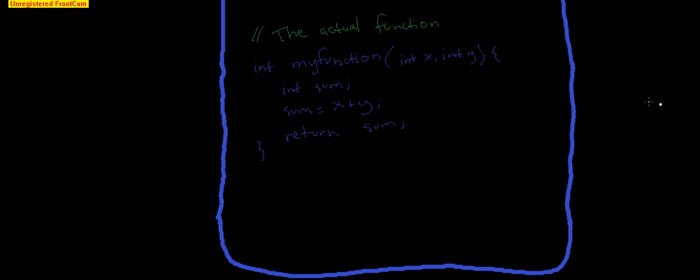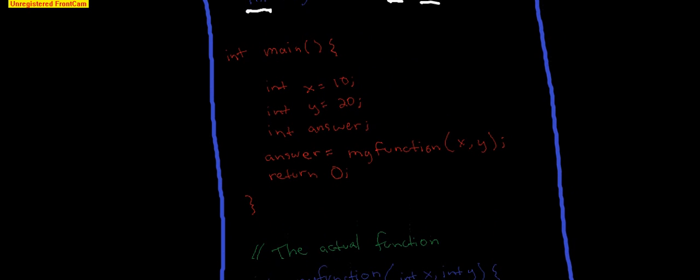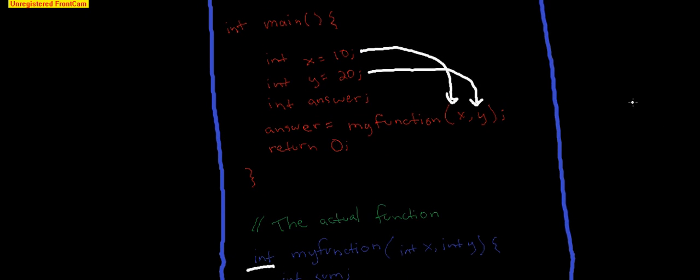Now let's take a look at the actual function declaration. You need the function type — ours is of type integer. The name of the function is my function. The parameters passed in are two integers, x and y. Then we create sum, sum equals x plus y, and we return that sum. Looking at how the function is used in main: we have integer x equals 10, integer y equals 20, and we create a variable to store the answer. Answer equals my function — this passes 10 into x and 20 into y, my function adds them and returns sum, so answer equals sum. That's the basic idea of how you use functions and how you pass parameters into them.